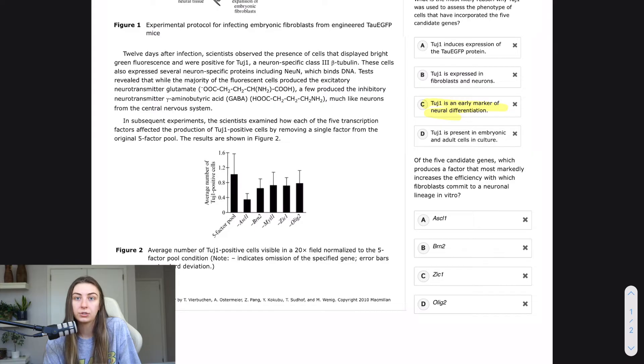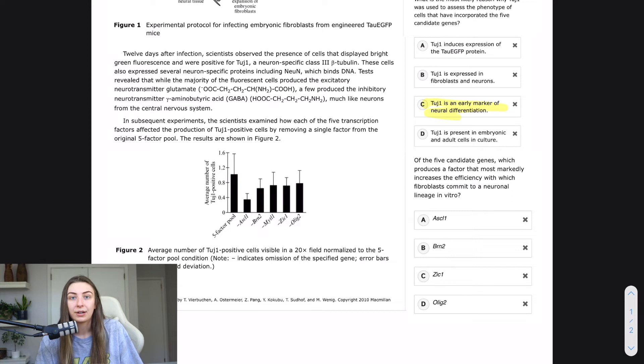We were trying to get fibroblasts to commit to a neural lineage, AKA turn into a neuron. So now the question can be simplified to of the five candidate genes, which produces a factor that most markedly increases the efficiency of the experiment. Now let's simplify it down even more. The question saying which produces a factor that most markedly increases the efficiency, which blah, blah, blah. To me that's basically just saying, of the five candidate genes, which is the most important in this experiment?